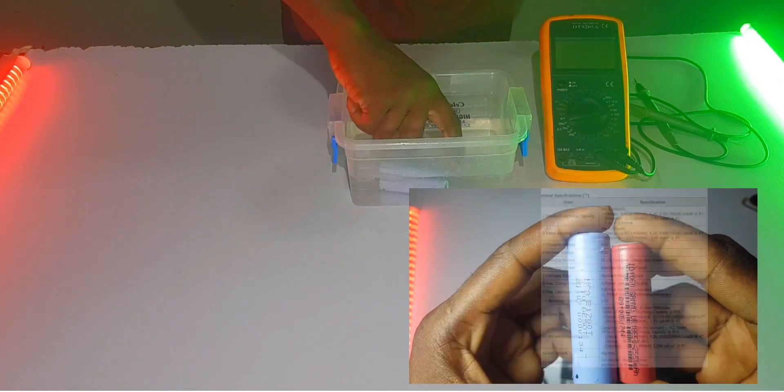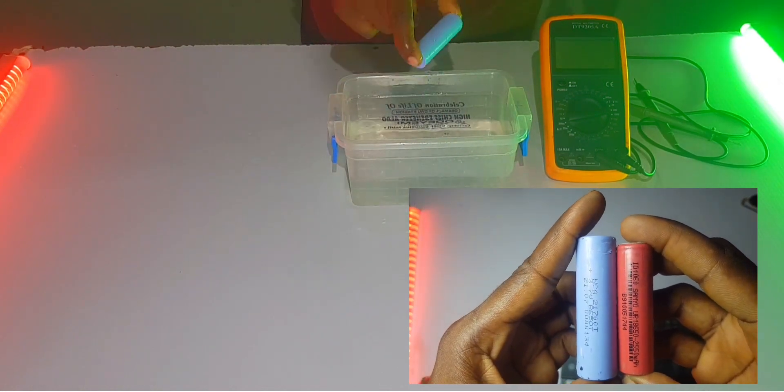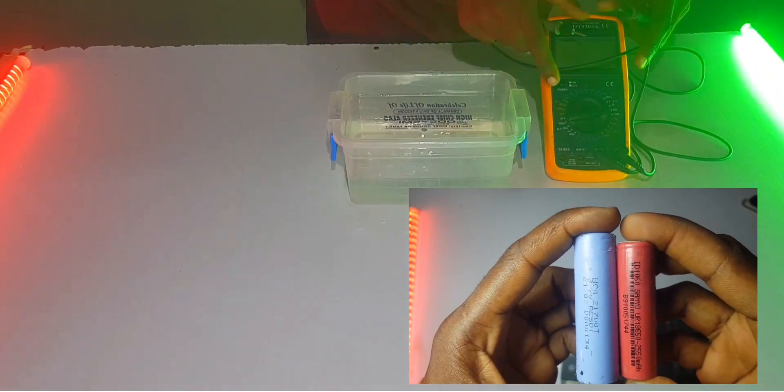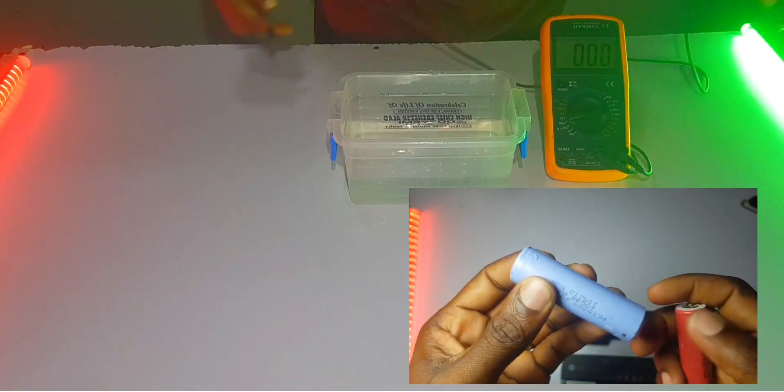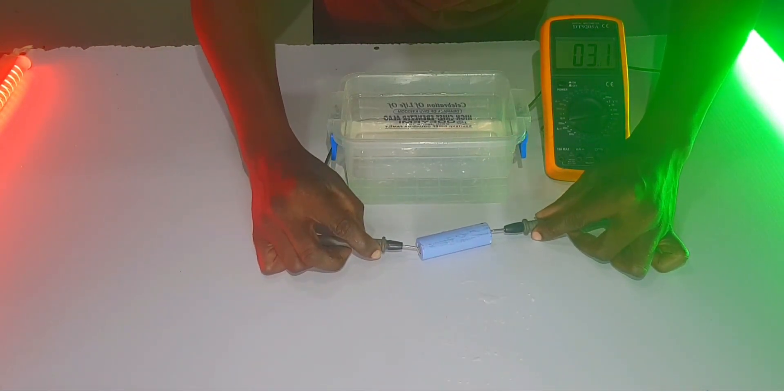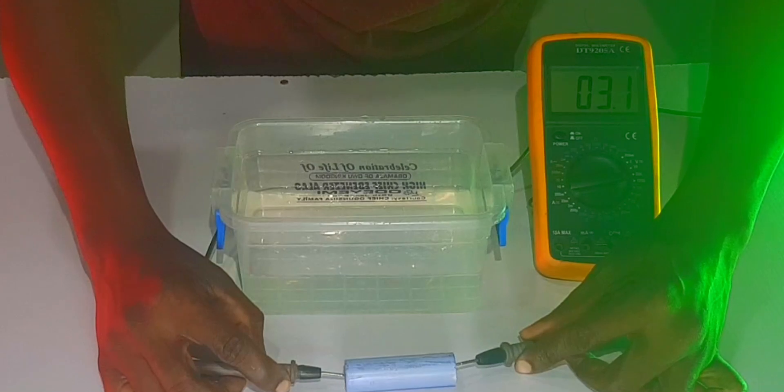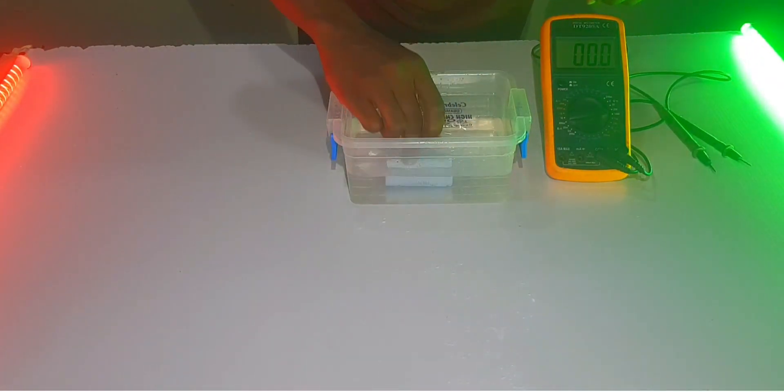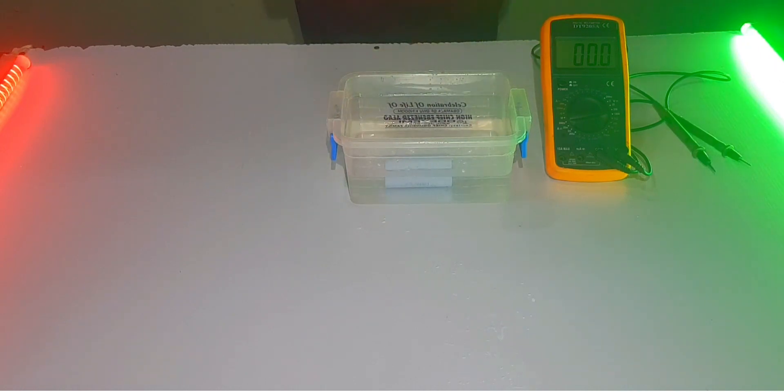First of all, one of the things I didn't do is check the actual voltage of the battery. It says 3.1 volts on the battery. Now we can put it in the water and let's see what the reaction is going to be.